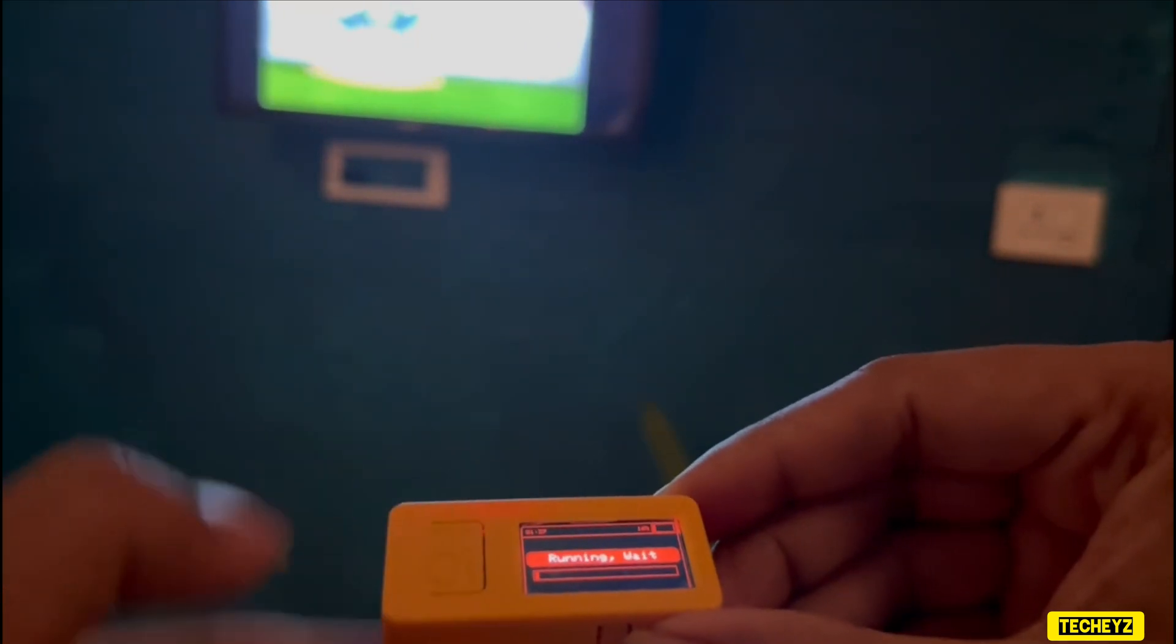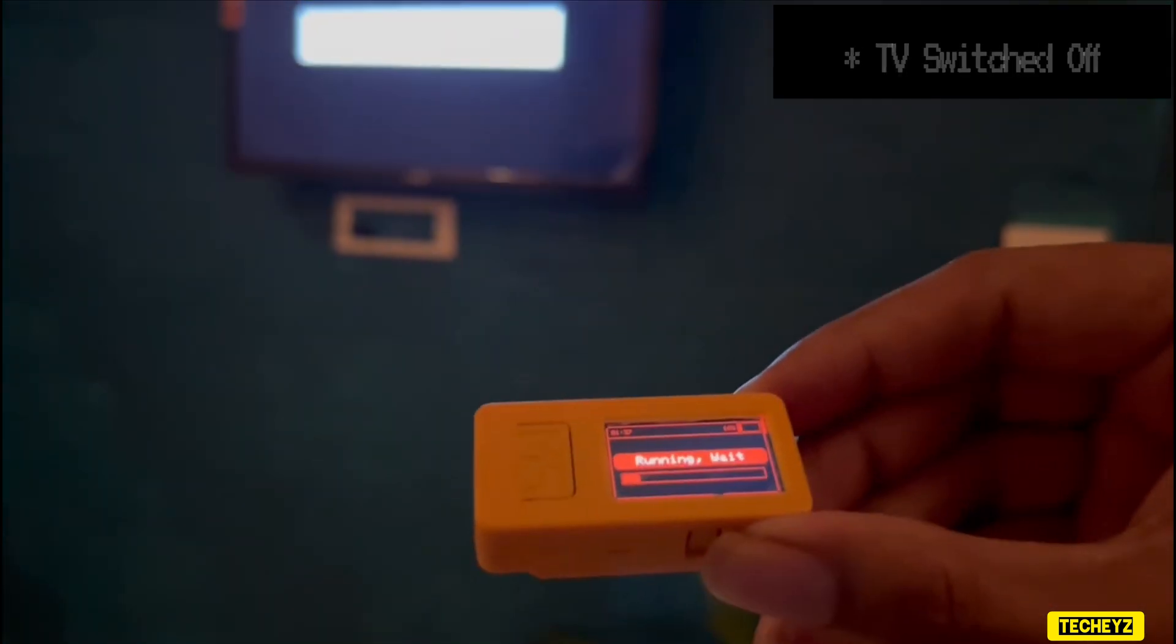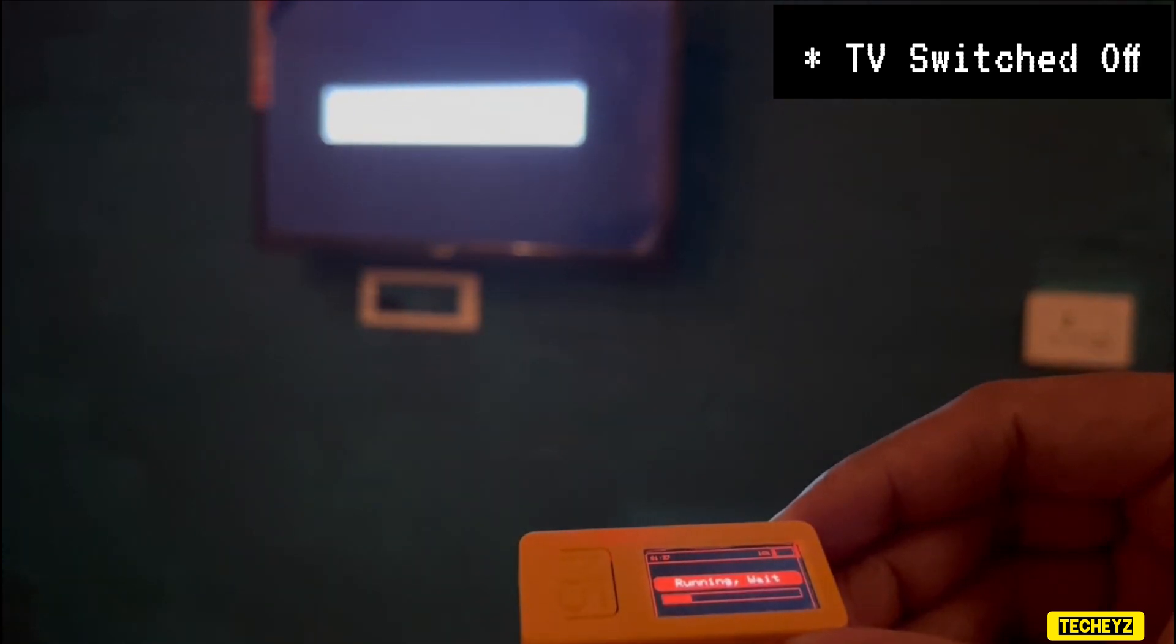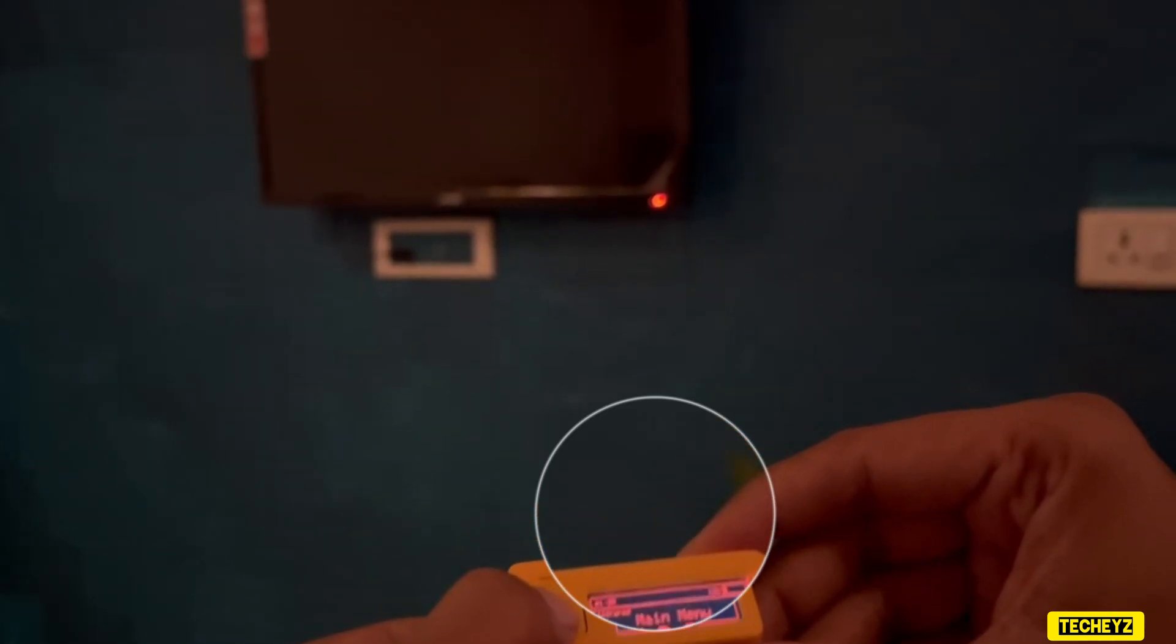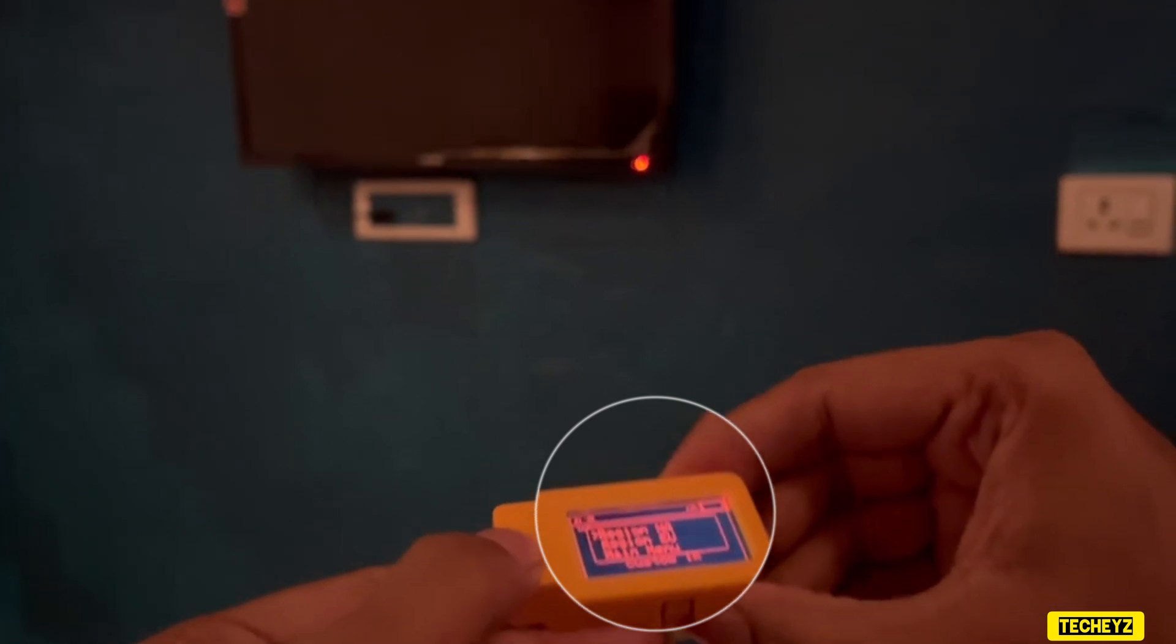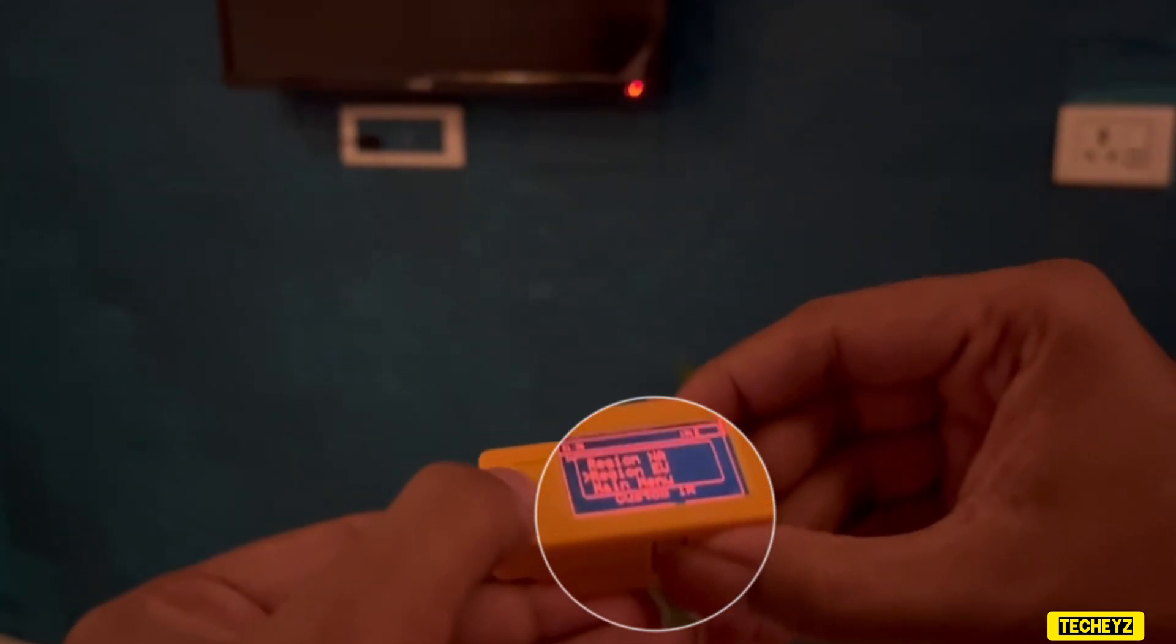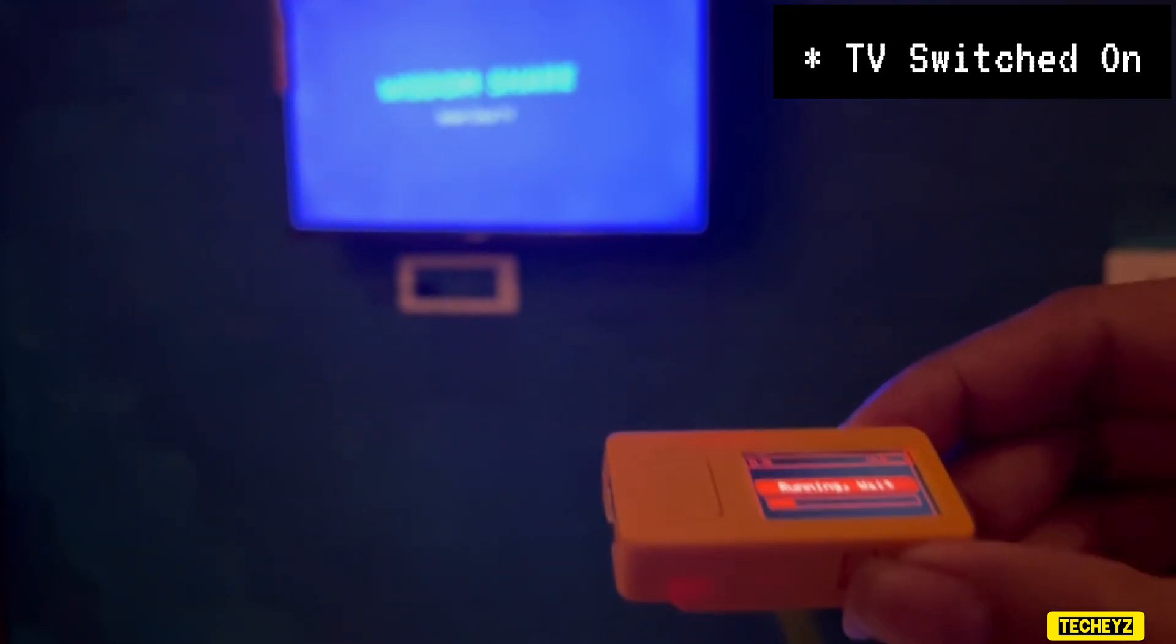As you can see, once the code hits, it performs the function and my TV is switched off. I will perform the same action again and once the relevant code hits the IR receiver, the action will be performed. And as you can see, my TV is switched on.